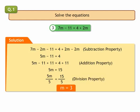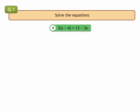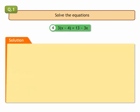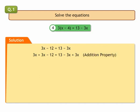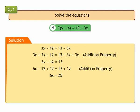4. 3 into bracket x minus 4 is equal to 13 minus 3x. On multiplying x minus 4 by 3, we get 3x minus 12 is equal to 13 minus 3x. To eliminate 3x on right side, we add 3x to both sides of the equation. We get 6x minus 12 is equal to 13. Adding 12 on both sides of the equation, we get 6x is equal to 25. Dividing both sides of the equation by 6, we get x is equal to 25 upon 6.